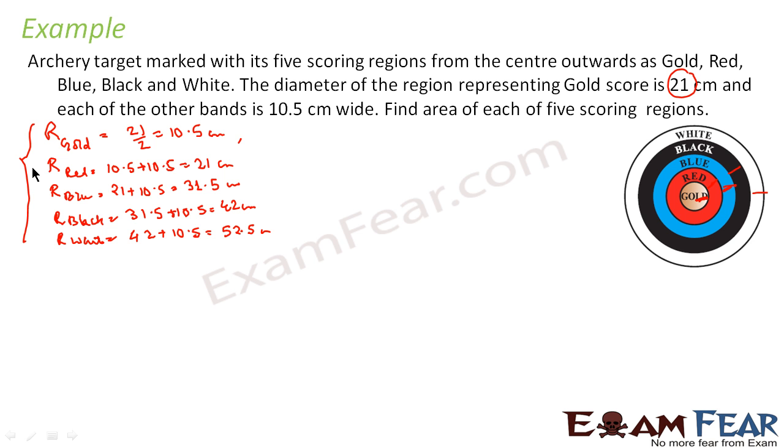Now, I have to find what? The area of all the regions. Area of gold is very simple, it is just a circle. We have the radius, we can find the area, πr². Correct.